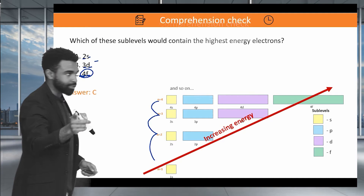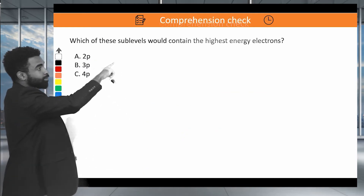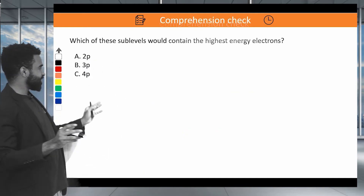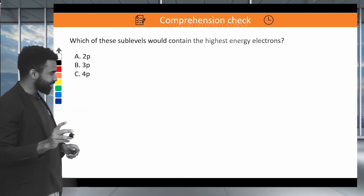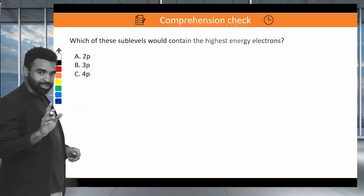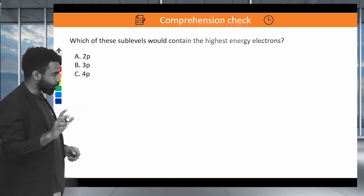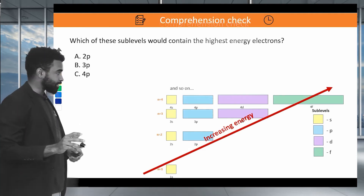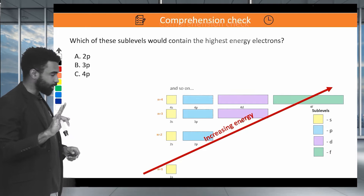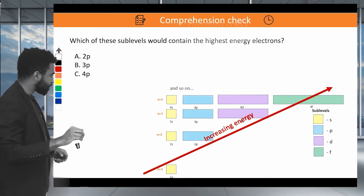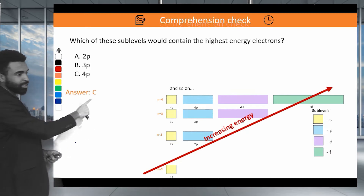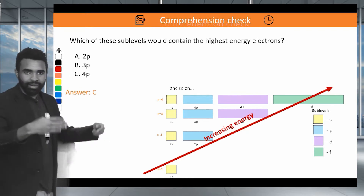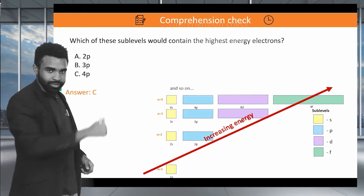A similar question: which of these sublevels contains the highest energy electrons? This one is straightforward — the main levels are going up 2, 3, 4, so level 4 must be higher energy than the others.